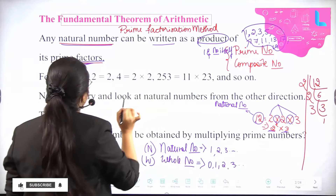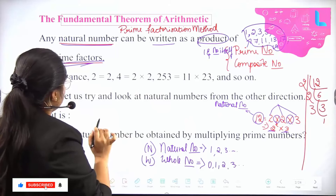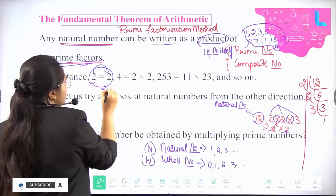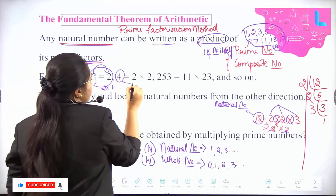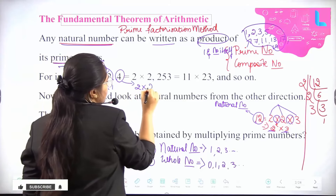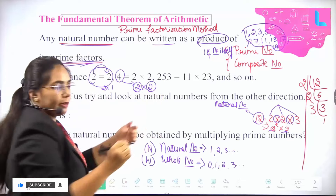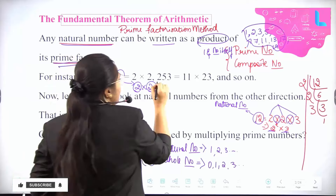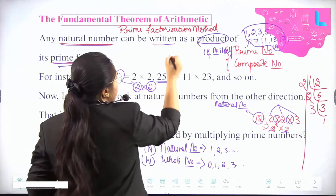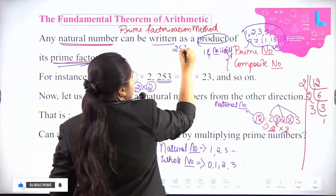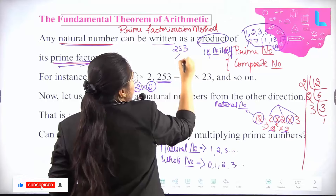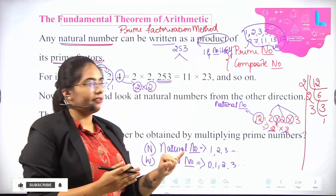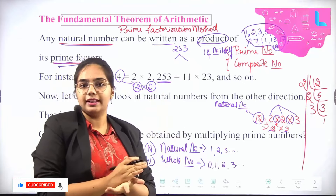For instance, as given in these examples: 2 can be written as 2 × 1; 4 can be written as 2 × 2 — both are prime factors and this is the product of prime factors. What about 253? Let's check how 253 can be divided. It is not divisible by 2.